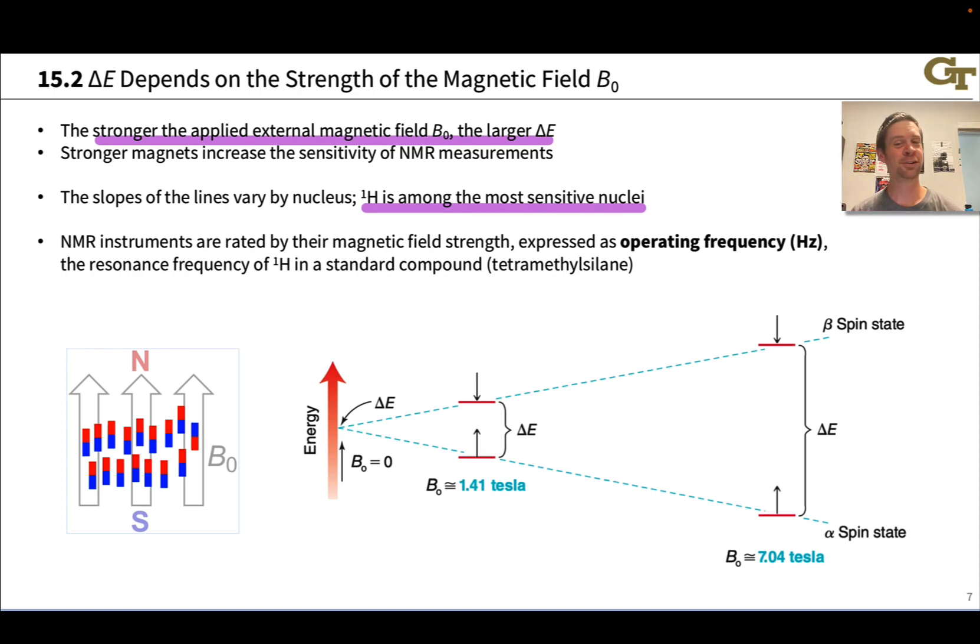Carbon-13 and other nuclei, we're not so lucky. We can still collect spectra for those elements, but they're not as clean-looking, not as nice-looking, and they're often not as structurally informative as proton NMR spectra.